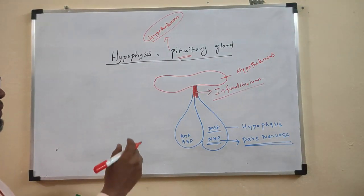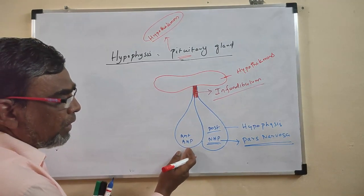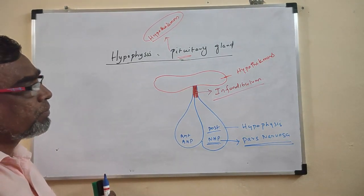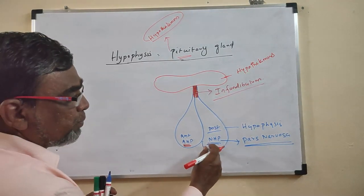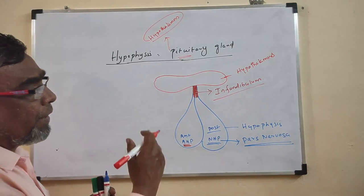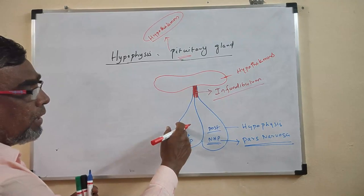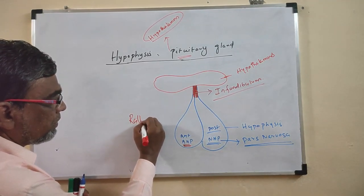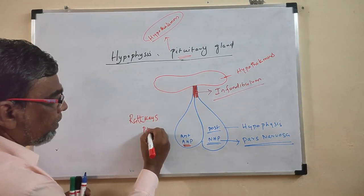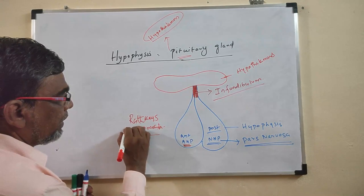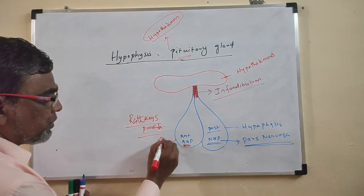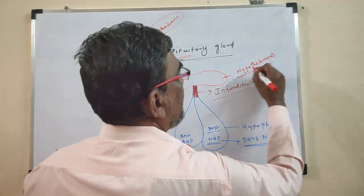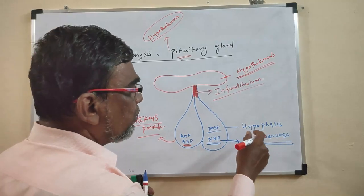During embryonic development, the anterior lobe — adenohypophysis — develops from the pharynx region of the embryo. The posterior lobe — neurohypophysis, or pars nervosa — develops as an outgrowth of the hypothalamus. It contains nervous tissue, which is why it is called the neurohypophysis.